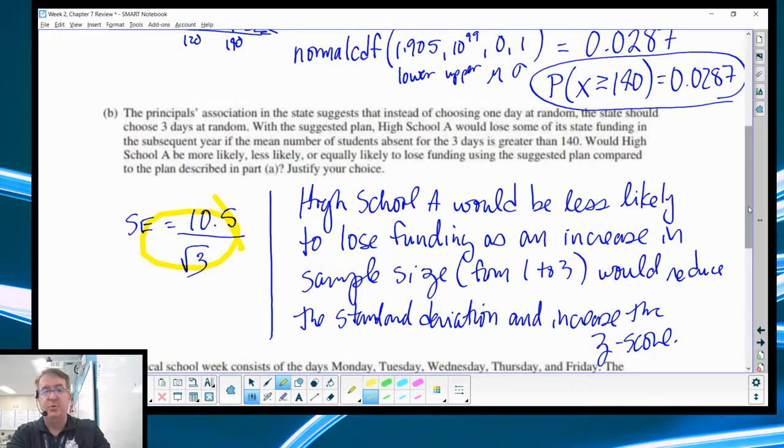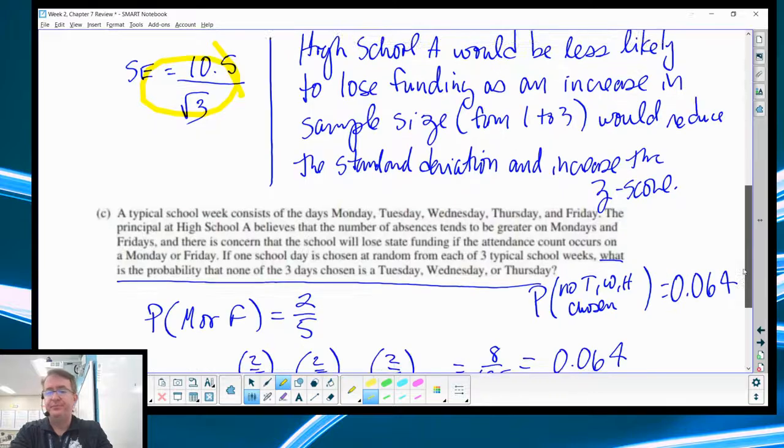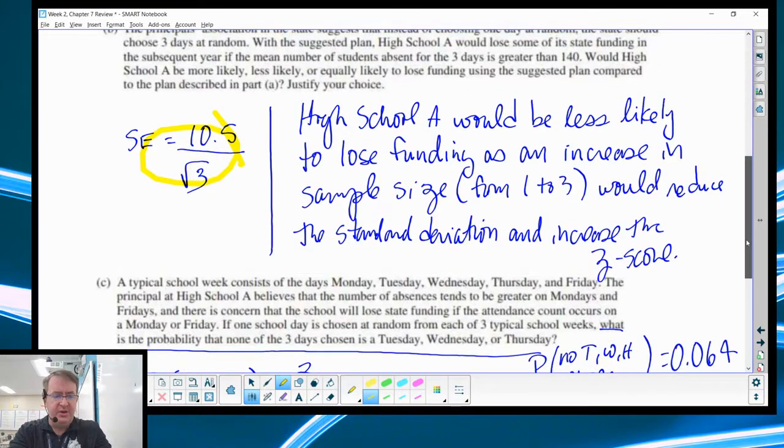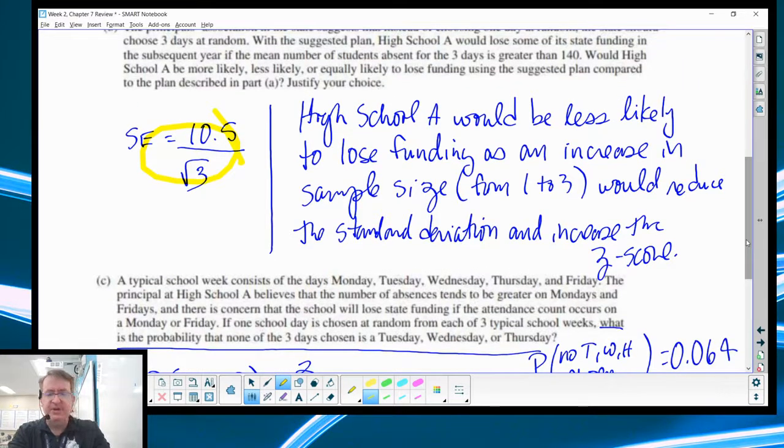So the standard deviation goes down. And could you calculate it out? Probably. Do you need to? No. What you have to say is that high school A would be less likely to lose funding. Why? Because the increase in sample size would reduce the standard deviation, and therefore, increase the Z-score. And because of that, then, the probability will go down. If you calculate it out, if I remember the rubric correctly, they do give you credit for that. The key here is write this step right there. Don't forget about it.